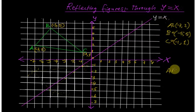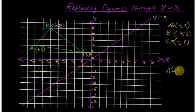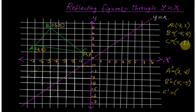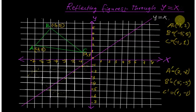Because of the rule y equal to x, A dash will be obtained by interchanging x and y. So A dash equals 2 comma negative 7. B dash is going to be 5 comma negative 5, and C dash is going to be 1 comma negative 1.